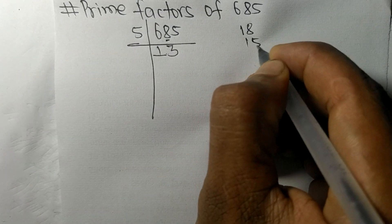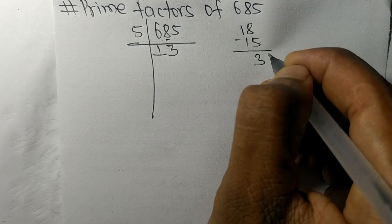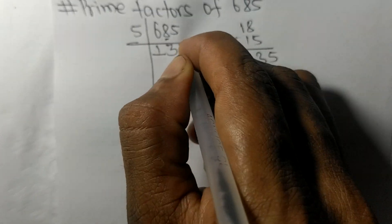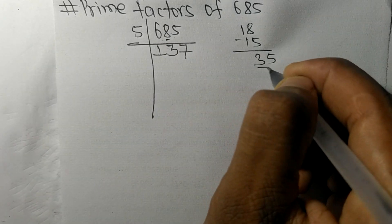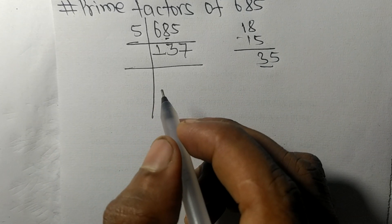And this 5, 35, 5 times 7 means 35. So now we got 137.